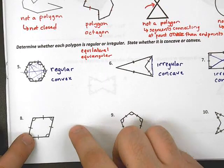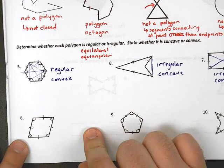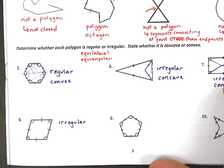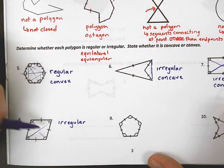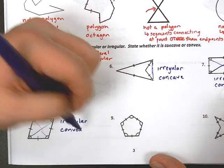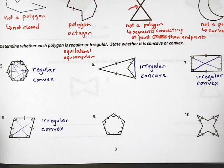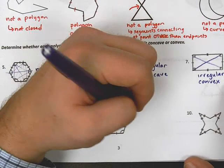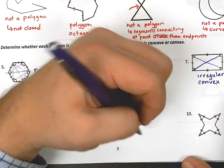Number eight is actually the opposite. I'm equilateral — I have the same ticks — but now my angles have different arc marks. So once again this is irregular, because it's not both equilateral and equiangular. And this is convex — I draw my diagonals and they're inside. Number nine: I see all the same ticks and all the same arc marks, so this is regular. And we know that if we drew in all of the diagonals they would all be within the polygon, so once again we are convex.